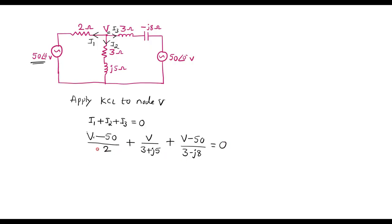Now let me simplify this. I can represent it as V by 2 minus 50 by 2, plus this can be written as V divided by 3 plus J5, plus here I can represent it as V divided by 3 minus J8, minus 50 divided by 3 minus J8, is equal to zero.